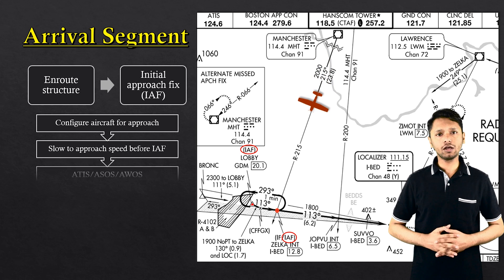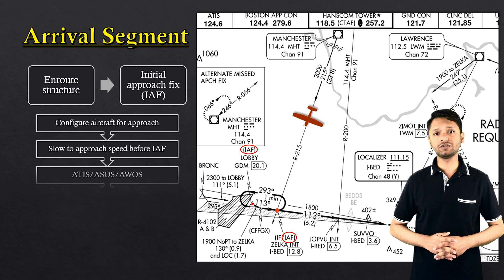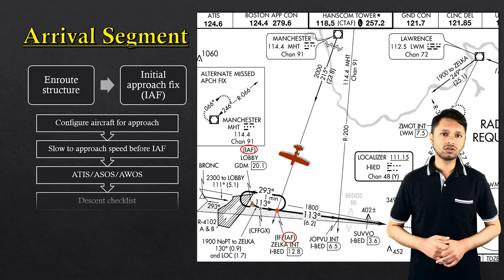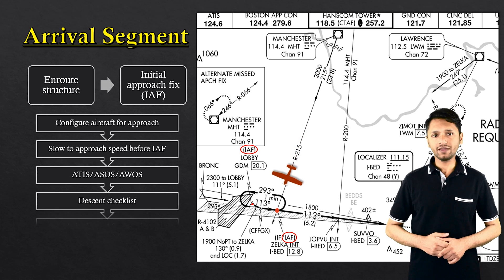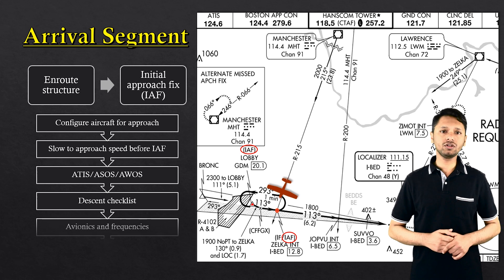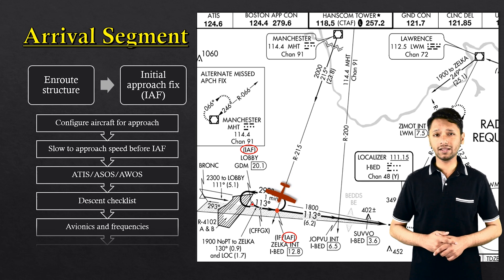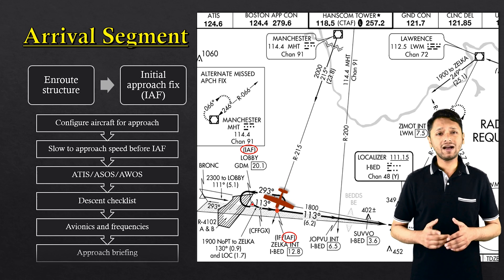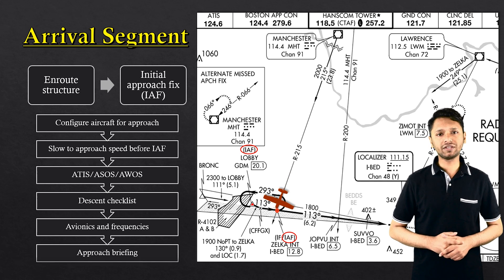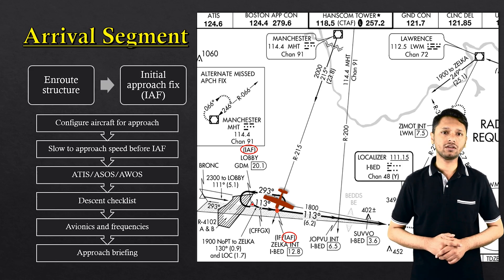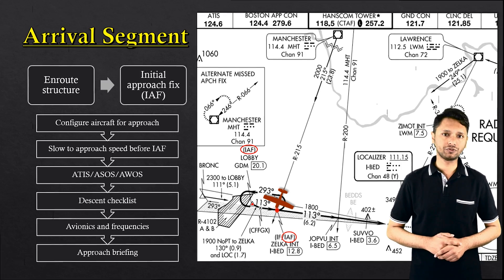Before reaching the initial approach fix, the pilot must slow down the aircraft to its approach speed, get the updated weather reports, complete the descent checklist and the avionic setup, including tuning to the correct ILS and communication frequencies. Pilots must also complete the approach briefing prior to initiating the instrument approach procedure.